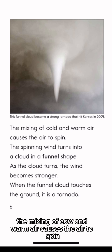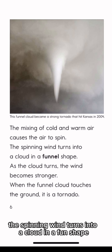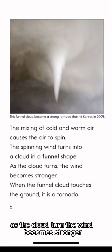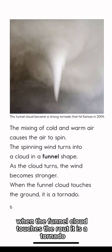The mixing of cold and warm air causes the air to spin. The spinning wind turns into a cloud in a funnel shape. As the cloud turns, the wind becomes stronger. When the funnel cloud touches the ground, it is a tornado.